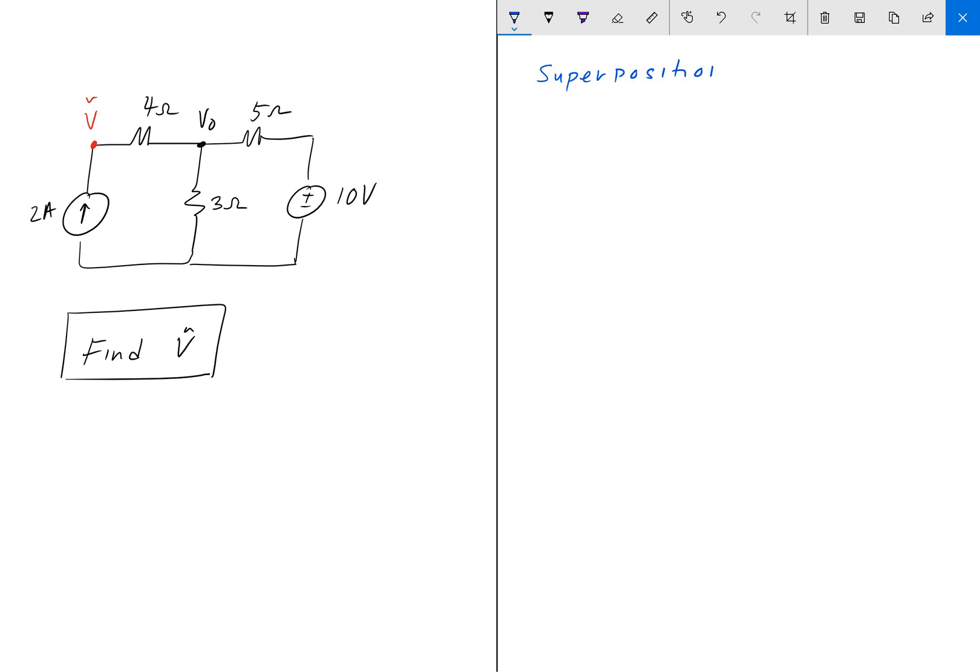Superposition. And what that means is that we are going to solve the circuit twice. Once with a shorted DC source, so the 10 volts, and once with the current source set to the open configuration. And we're going to solve for V tilde on both of those configurations, and we're going to add the two values together.